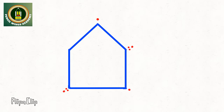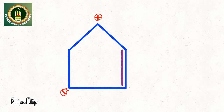Now assign the formal charge to the carbon atom, and finally make a pi bond using one positive and one negative charge. This is the final resonating structure of the given molecule.